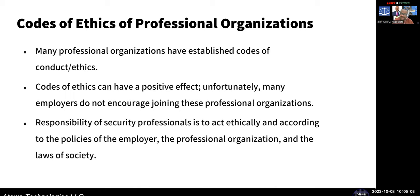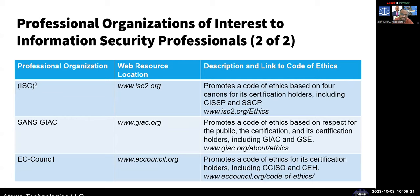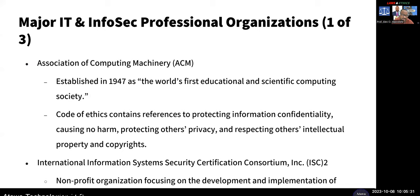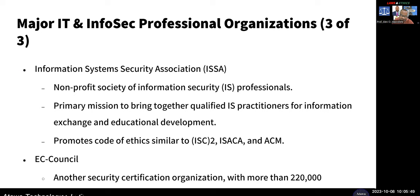Most organizations have their own code of conduct or ethics. Professional organizations include: ACM, ISACA — which I belong to and hold the CISM (Certified Information Security Manager) certification — ISSA, which I also belong to, ISC², SANS (originally the Systems Administration, Networking, and Security Institute — a very large, reputable organization), and the EC Council, which does the ethical hacking certification. The ACM Computing Machinery has its own separate code of ethics, and there are ISSA branches in UAE and the U.S.